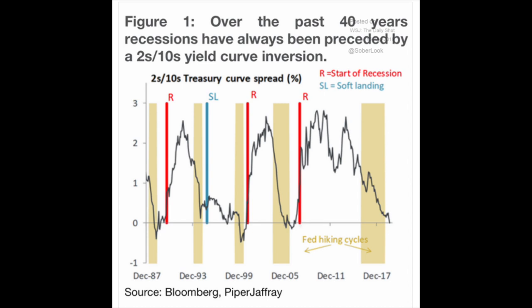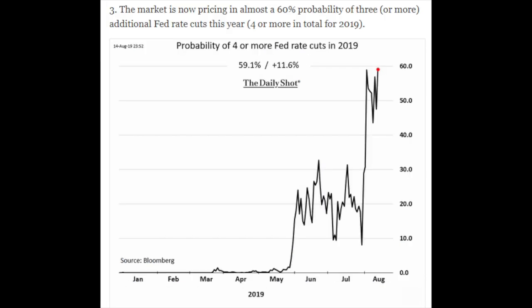Nevertheless, looking over the last 40 years, recessions have always been preceded by the 2-year and 10-year yield curve inversion — we have 2007, 1999, 1993, which was a soft landing, and then also the 1990s. When that happens and smart money chases safety in longer term bonds, it signals that there might be a recession. We'll see whether stimulus prevents it. The Fed has already cut rates, and it is now expected to cut four or more times in 2019, which was unthinkable just a few months ago.